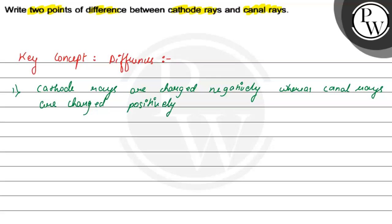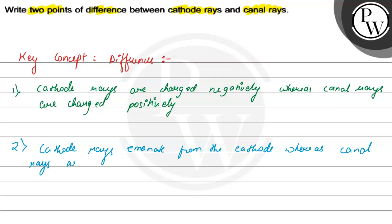Now, what is the second point of difference? Cathode rays emanate from the cathode — they emanate from the cathode, which is why they are called cathode rays. Whereas canal rays do not emanate from the anode; instead, they are produced inside the chamber by the collision of gas molecules.